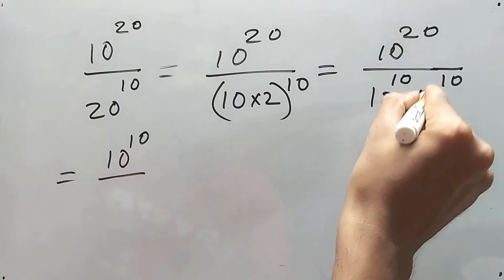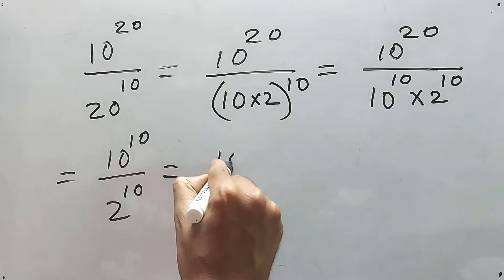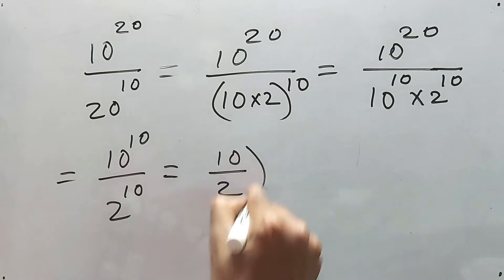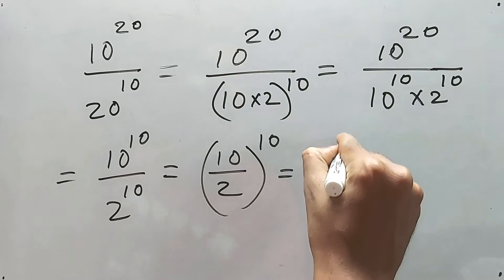And at the bottom it will be 2 to the power 10, right? Now simple thing, both will be 10 by 2 whole to the power 10. Now we know the value of 10 by 2, that is 5 to the power 10.